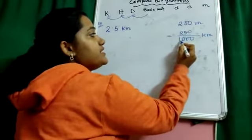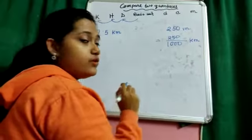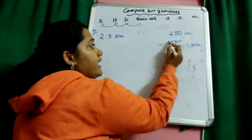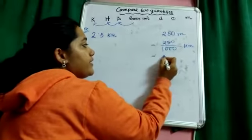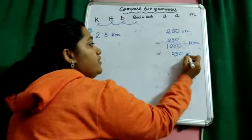250 divided by 1,000. Here 3 zeros are there. So, I need to take 3 digits from the numerator and place the decimal point. So, it will be 0.250 kilometer.